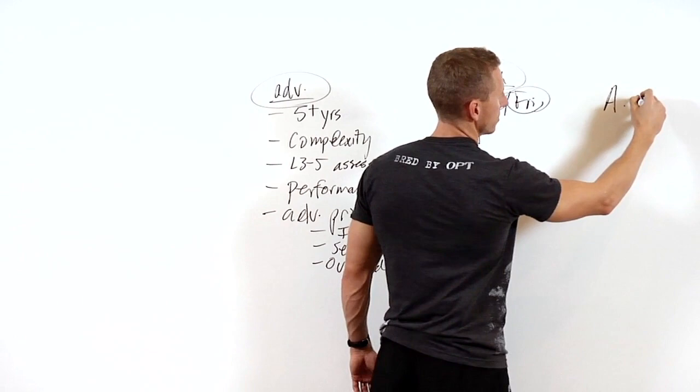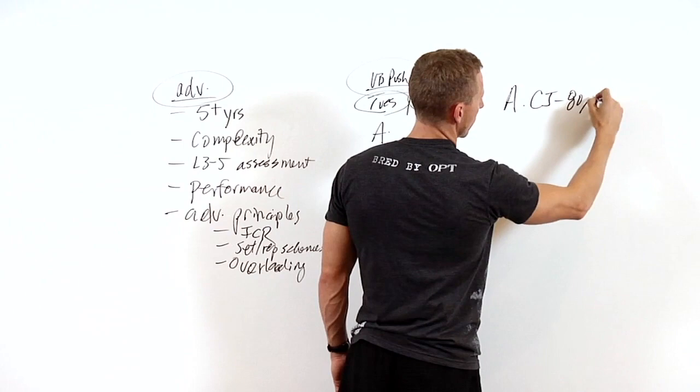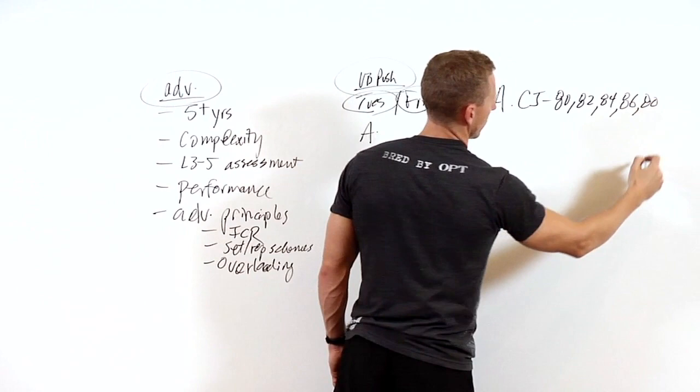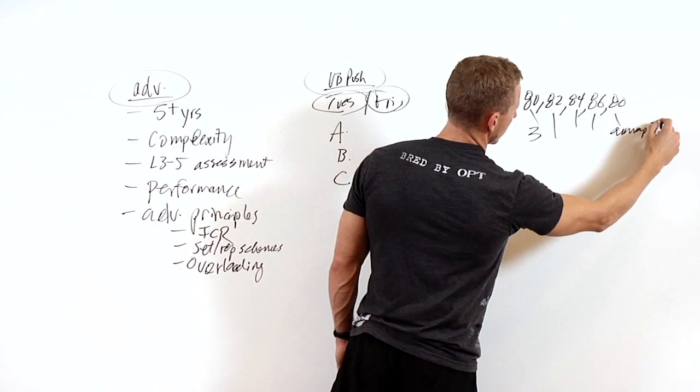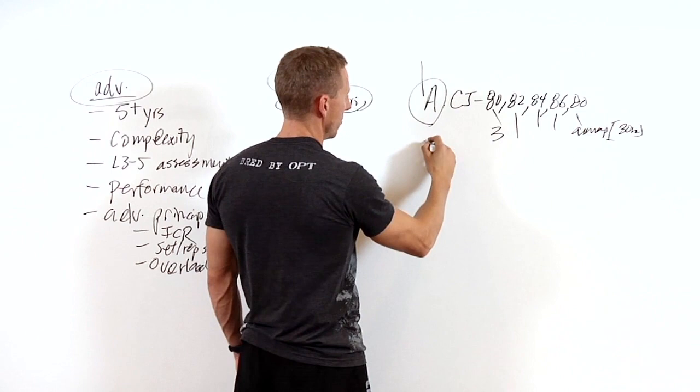An advanced prescription may be something like this: clean and jerk. We're going to use a percentage and different percentages per set. You're going to do triples for this person because we know the neuromuscular efficiency, and then we're going to do an AMRAP in a certain time frame, like a 30 second time frame.